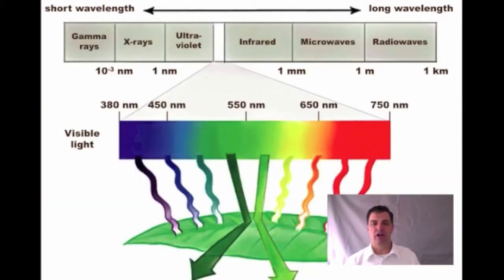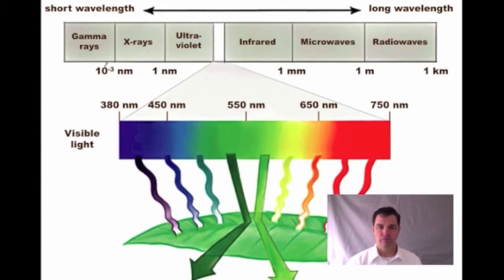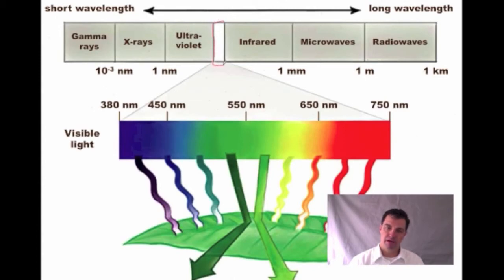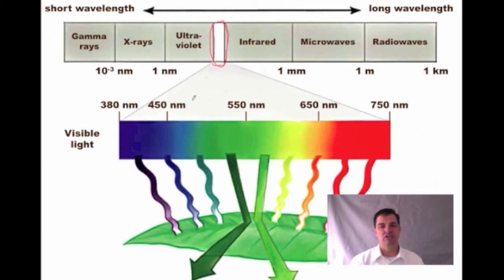First thing we have to do when we talk about the light reactions is talk a little bit about light. Light is a type of energy, and there are different forms of energy — different wavelengths like gamma rays, x-rays, ultraviolet. And then right in here, based on the size and wavelength at which the light travels, this is what we call the visible spectrum. You can take the visible spectrum and break it down into a variety of colors, which is what you see when you see a rainbow.